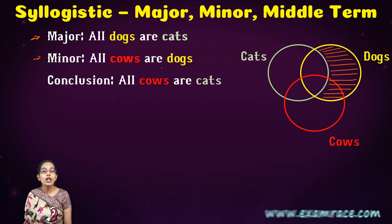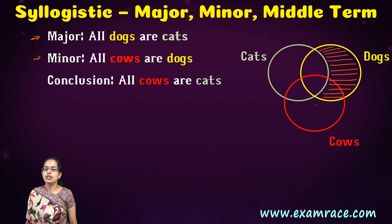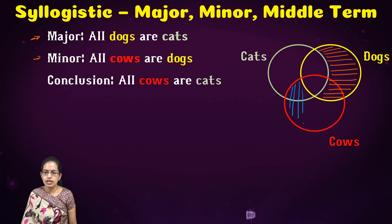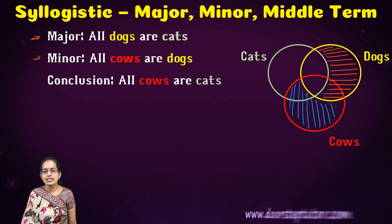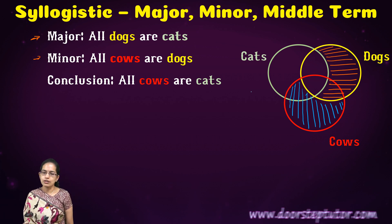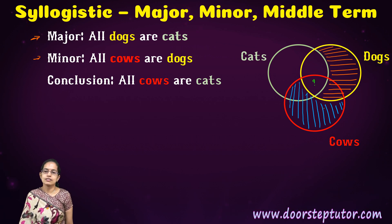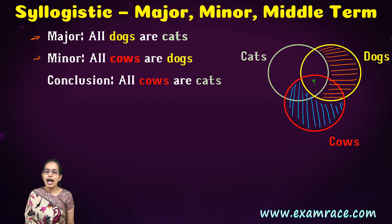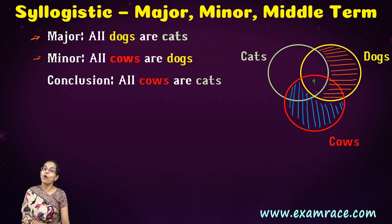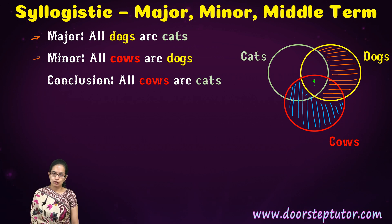The minor premise says all cows are dogs — meaning there is no cow which is not a dog. So I shade all the cows which are outside the region of dogs. Since these two regions are shaded, I draw the conclusion that all cows are cats. The cows can only be found in one region, and definitely if that is where the cows are, I can say all cows are cats — and that makes the conclusion true.